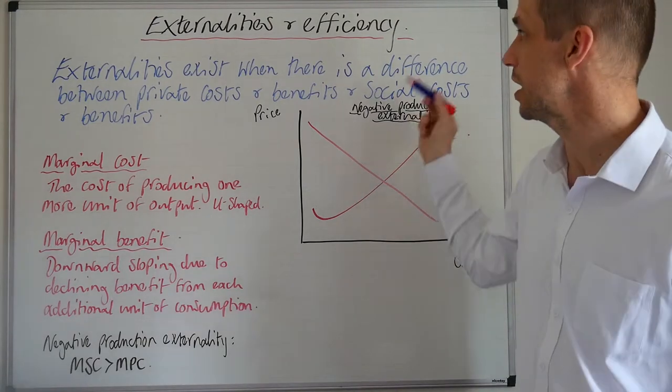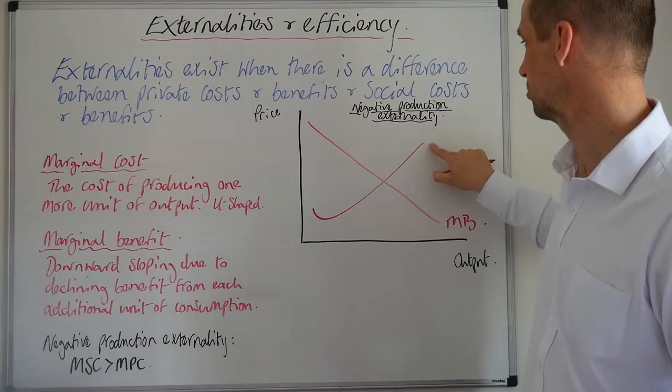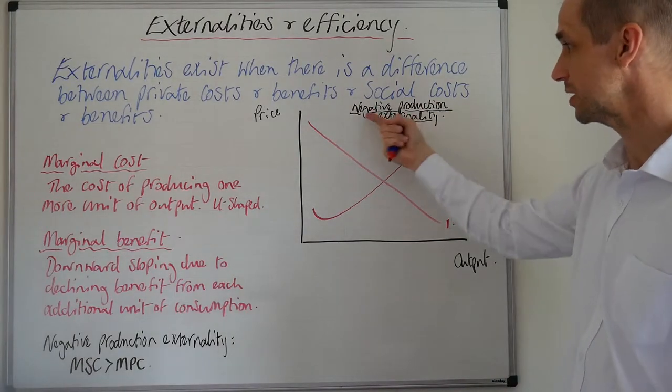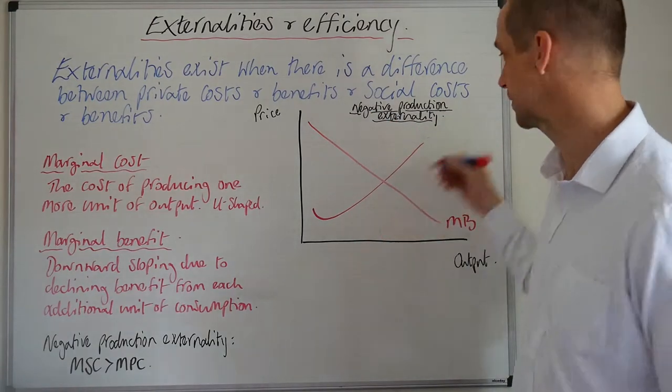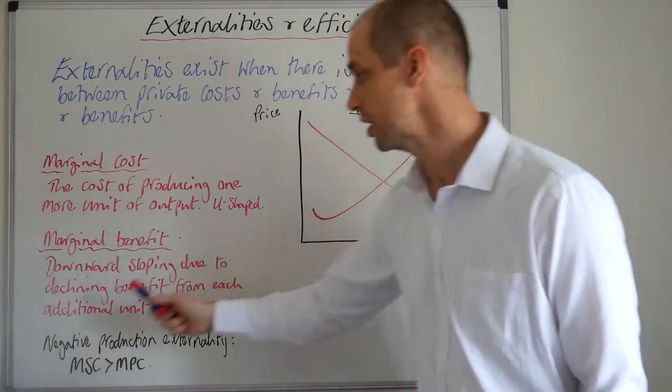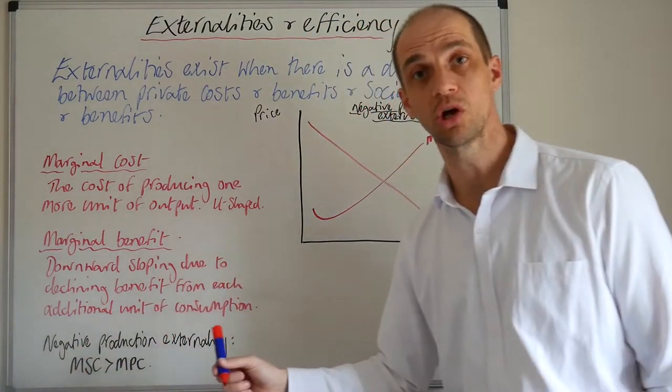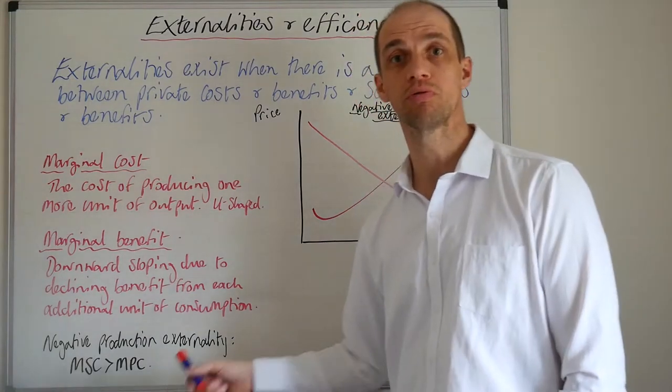Now, the issue is that we currently don't have a difference between these marginal costs and marginal benefits. But if we go back to this term, and just consider that we have a negative production externality, this really implies this sort of situation, that the marginal social cost is greater, is higher than the marginal private cost.